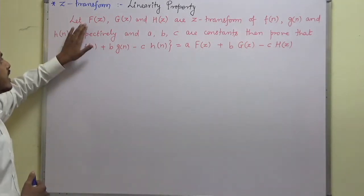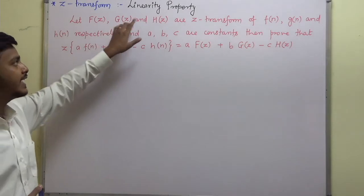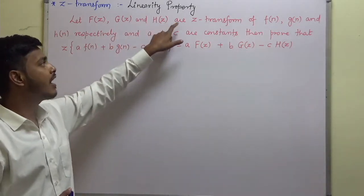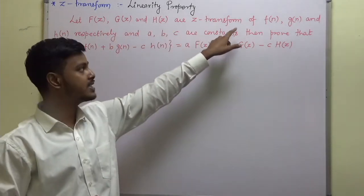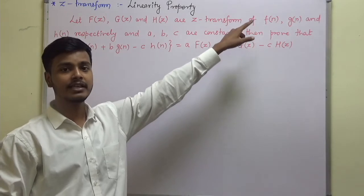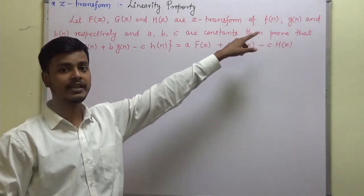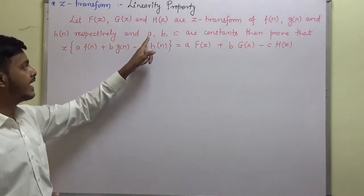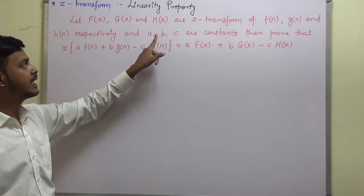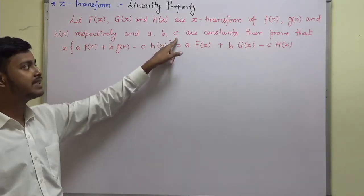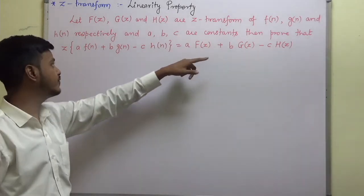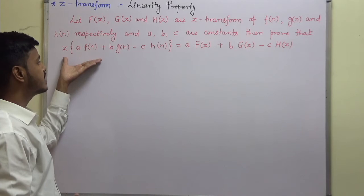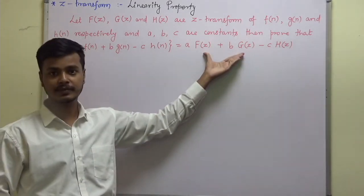Let F of Z, G of Z, and H of Z be Z-transforms of F of N, G of N, and H of N respectively, and A, B, C are constants. We prove that the Z-transform of the linear combination is the same linear combination of the individual Z-transforms.